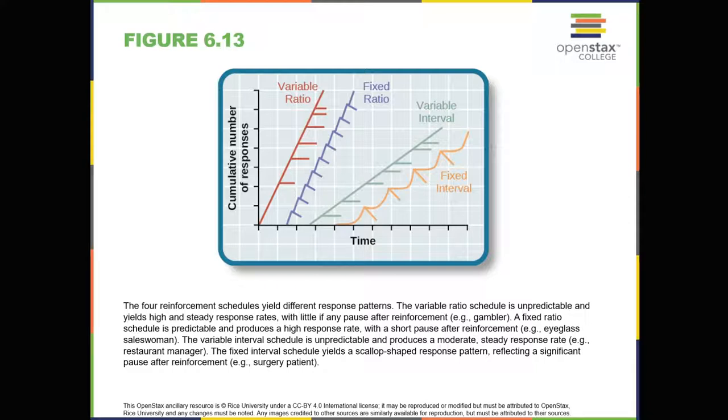In a variable ratio reinforcement schedule, the number of responses needed for a reward varies. This is the most powerful partial reinforcement schedule.